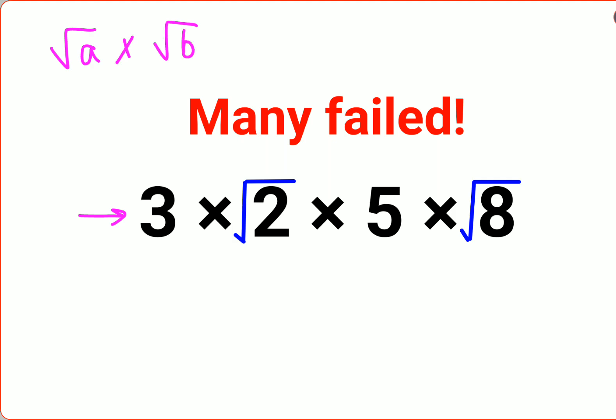...what we should do. So first when you solve this kind of question, first you should do the multiplication of the two products. That is, 3 into 5 gets you 15, and you had root 2 into root 8. Now like I said, whenever you have two numbers under a root, you can directly multiply them together.